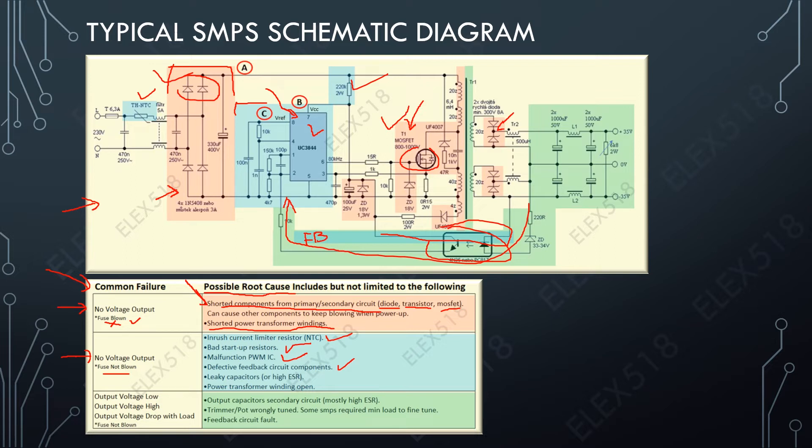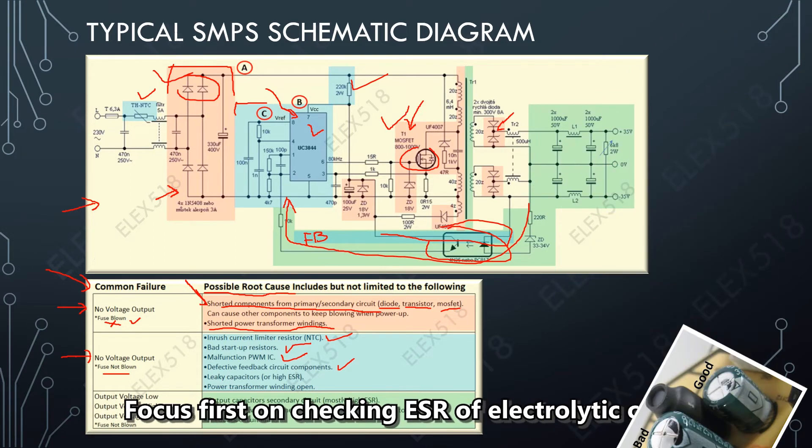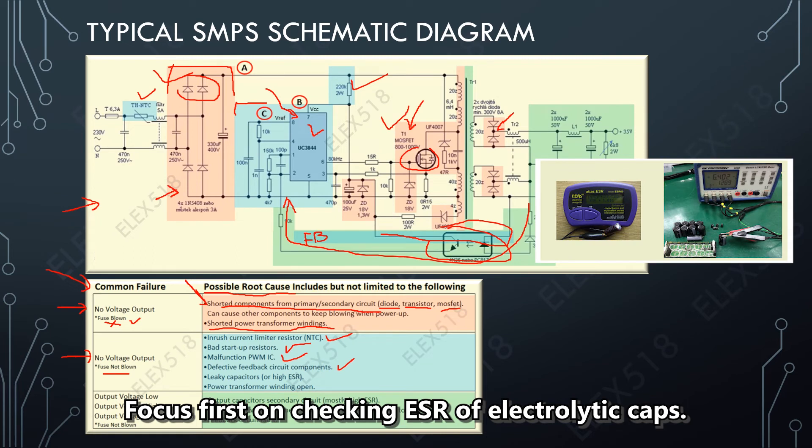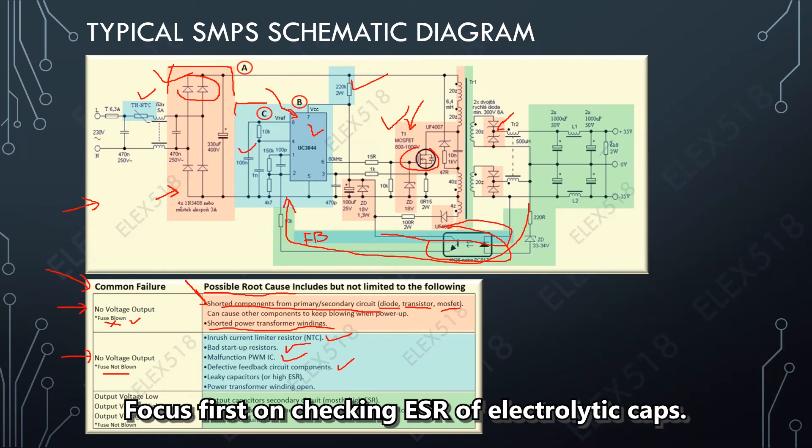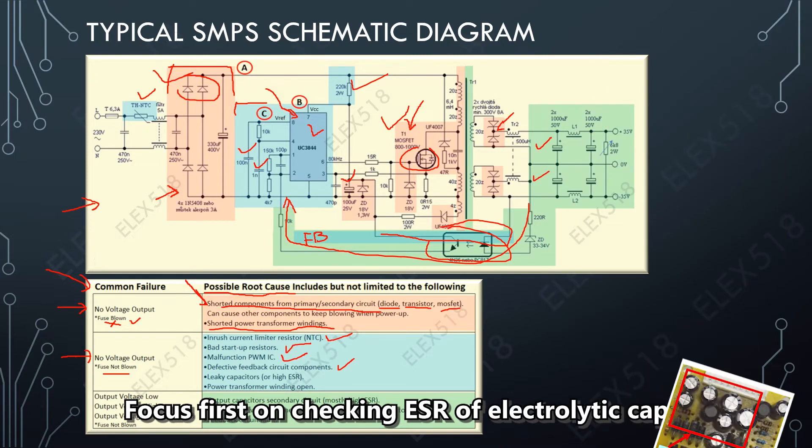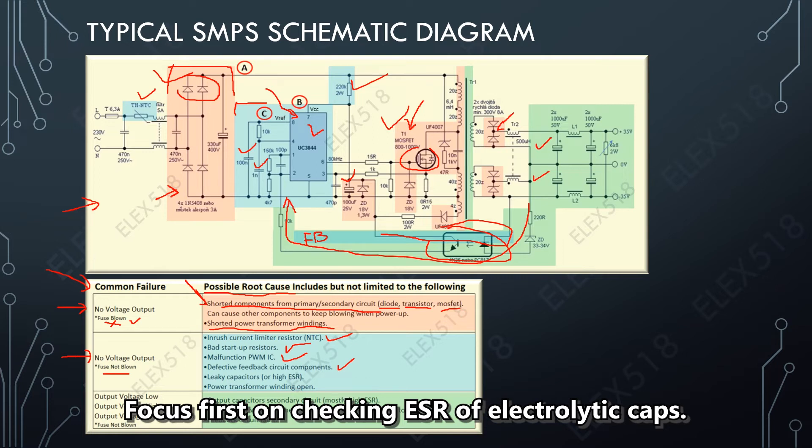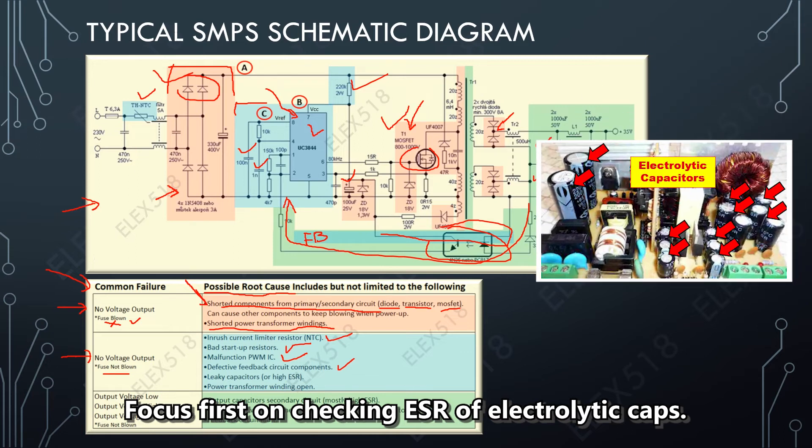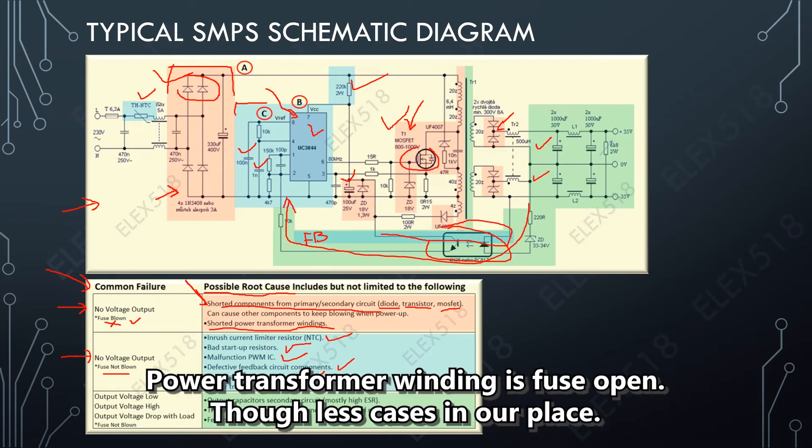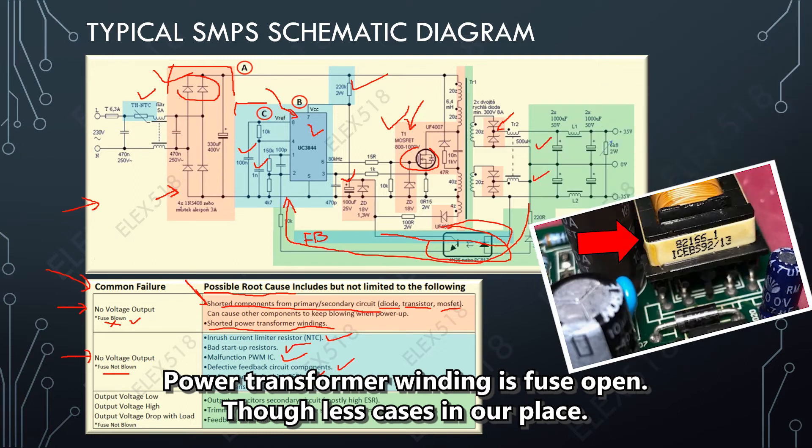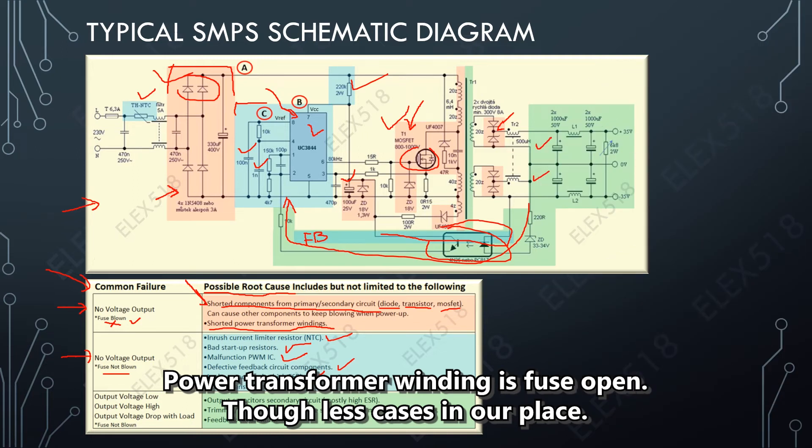Another potential root cause is leaky capacitor or high ESR capacitor. It could be these caps and also this output capacitor, but less likely. All the caps that have high ESR, especially electrolytic capacitors. The next one is power transformer winding open, and again it is very less likely to happen, but we also have experience that this power transformer winding was open and caused this type of failure.